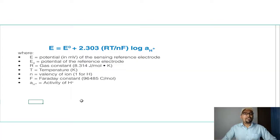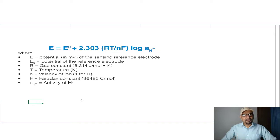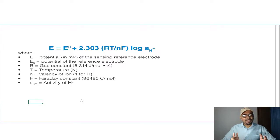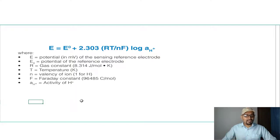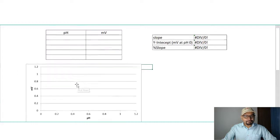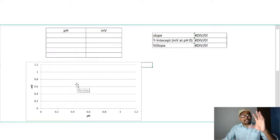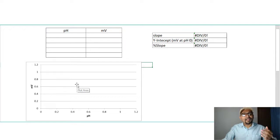The pH value is calculated using the Nernst equation, as you can see on the screen. This is the way pH value can be calculated using a suitable pH electrode. I am now going to explain how the slope and offset values during calibration of the pH meter can be calculated.